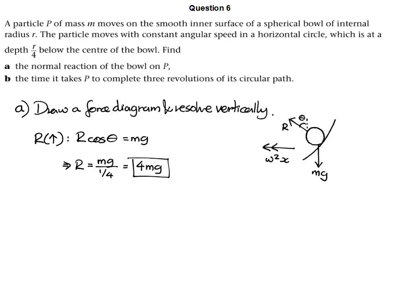This is exactly what we're doing for the very first part of the question. On the right, we have the force diagram. There are only two forces: gravity and the reaction force. And we have omega squared x as the acceleration due to circular motion. Resolving vertically and rearranging, we get that the reaction force is 4mg.